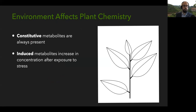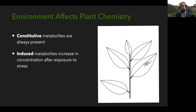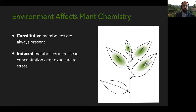Other metabolites are what we call induced — they increase in concentration after the tea plant experiences some source of stress. A really common source of stress is attack by insect herbivores. When a leafhopper starts feeding on the tea plant, the plant defends itself by inducing the production of chemicals that might make the leaf less palatable or slightly toxic to drive the insect away. Those responses can be localized to where the insect is feeding, but they can also be systemic, inducing metabolite production throughout the plant.